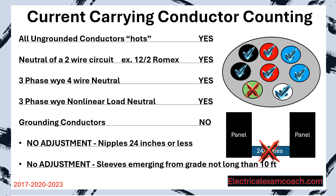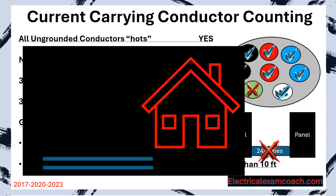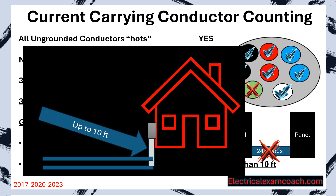There are no adjustments for sleeves emerging from grade that are not longer than 10 feet. For example, if you're doing a parallel 400-amp underground service using two sets of triplex, you've separated the triplex in the dirt so you don't need a bundling adjustment. But when you stub up to the panel, the answer is no adjustment is needed up to 10 feet — you can put them all in one conduit and stub up without doing a bundling adjustment.